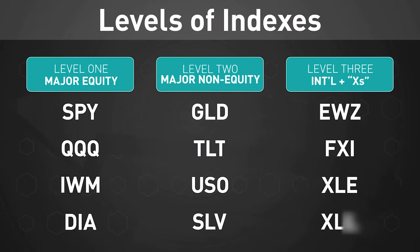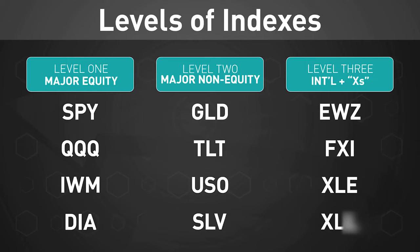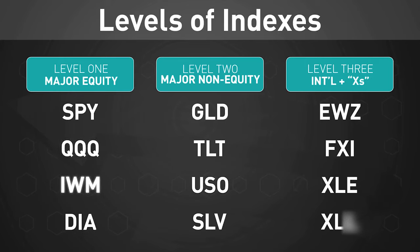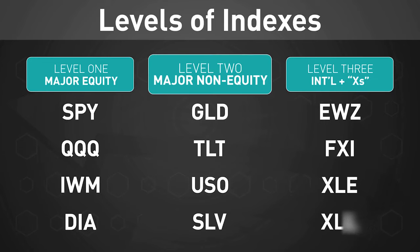Which indexes should you focus on? Let's think about them in three different levels — these aren't formal or official levels, but they help demarcate between different kinds. Level one: your major equity players — SPY (the S&P 500), QQQ (the Nasdaq), IWM (the Russell 2000), and DIA (the Diamonds, or Dow Jones).